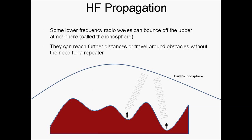HF radio waves bounce off the Earth's upper atmosphere, called the ionosphere. These waves can travel very far distances and can avoid obstacles.